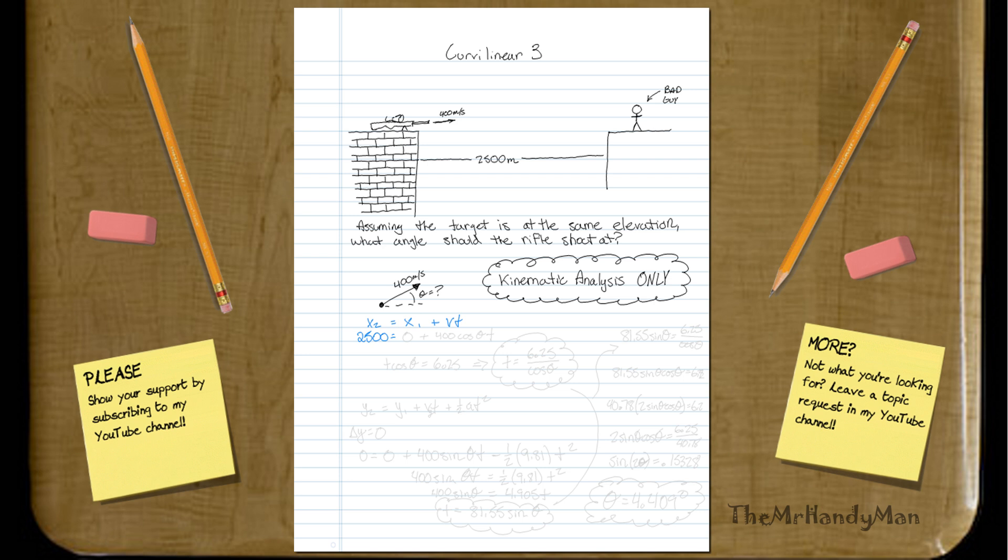So you have 2,500 equals 0 plus our velocity, which is going to be 400, but it's also going to be times cosine of theta. And that's just because if we go up at different angles, it's going to cause a more or less horizontal velocity. And don't forget, we have to multiply that by t.